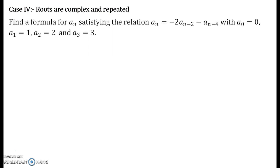Let us see the question and how to solve for this. The question says that we have to find a formula for a_n, and this is the recurrence relation given to us with the initial conditions: a_0 = 0, a_1 = 1, a_2 = 2, and a_3 = 3.